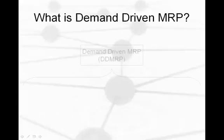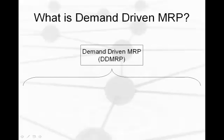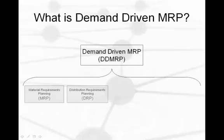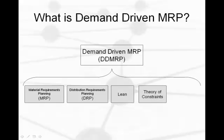Demand-Driven MRP is a multi-echelon solution for today's increasingly complex planning and execution scenarios. It takes the remaining relevant aspects of traditional MRP and DRP tactics and combines it with the pull-based or demand-driven approaches of Lean and the Theory of Constraints, as well as introduces revolutionary new innovations.